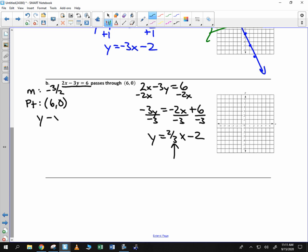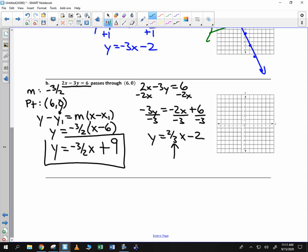Y minus Y1 is equal to M times X minus X1. Notice my Y value is 0, so it would just be Y equals negative 3 over 2 times X minus 6. Distribute the negative 3 halves. Negative 3 halves X, and then negative times the negative will be positive. 6 divided by 2 is 3, times 3 is 9. So that is the equation for the line that is perpendicular.